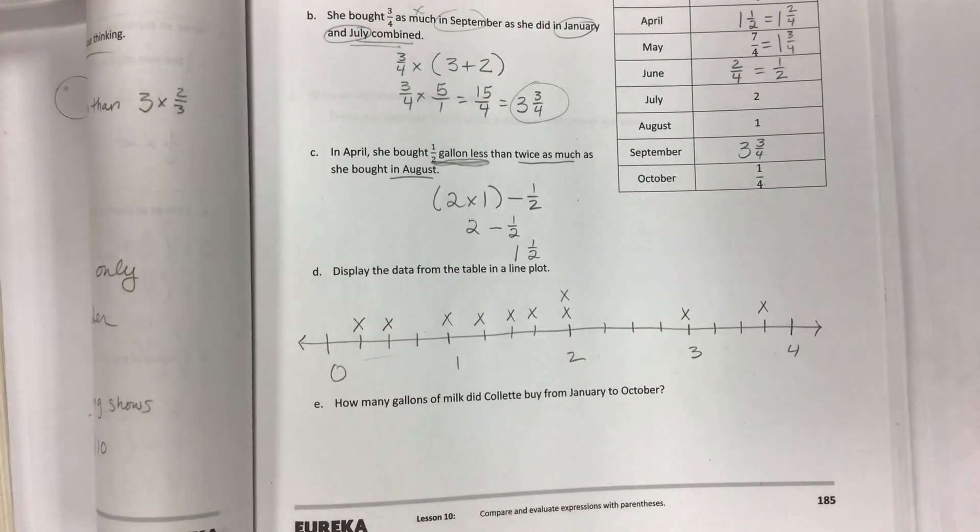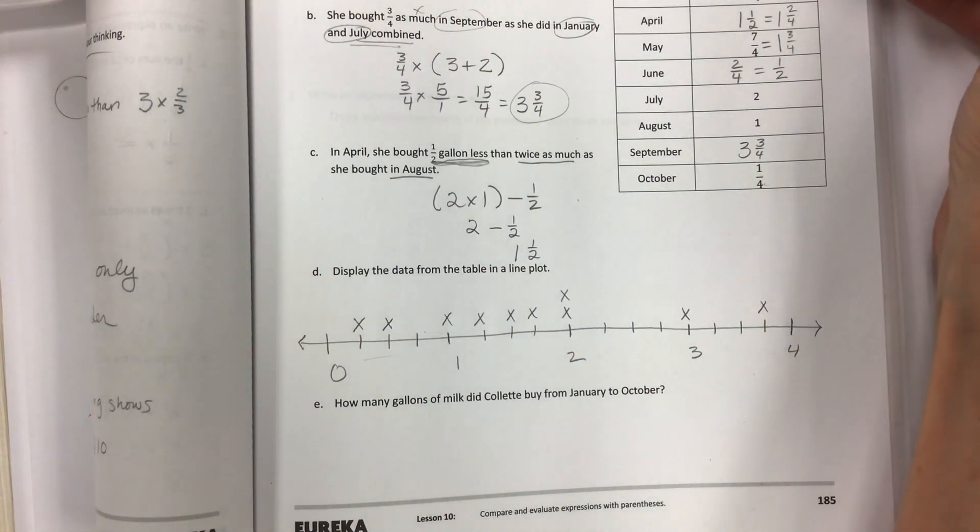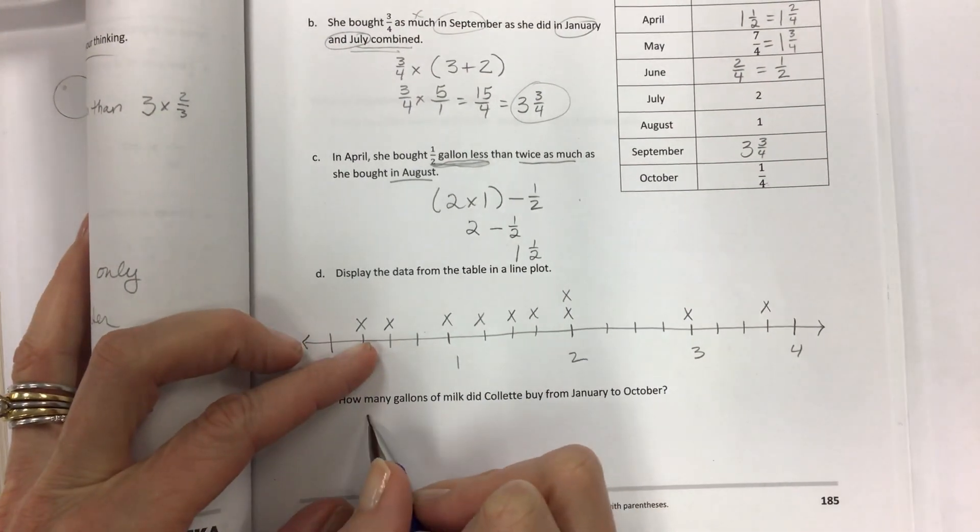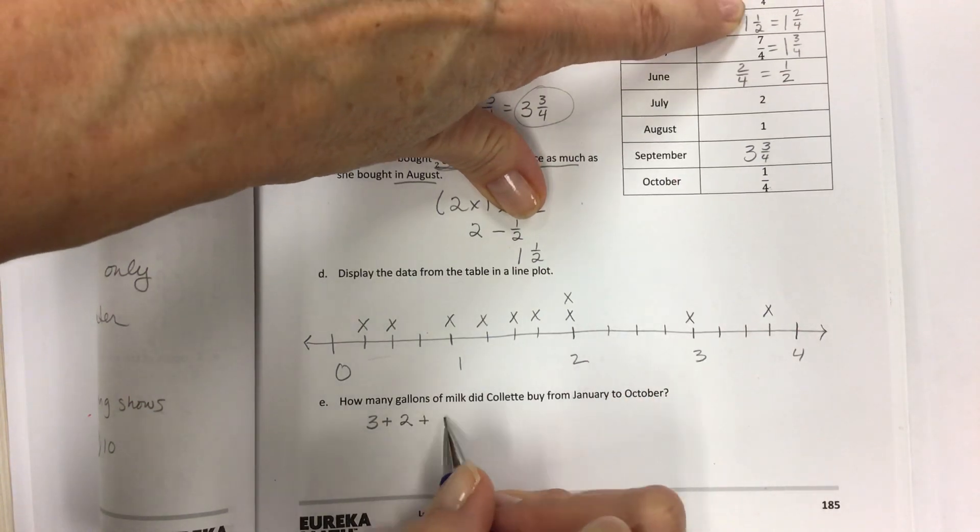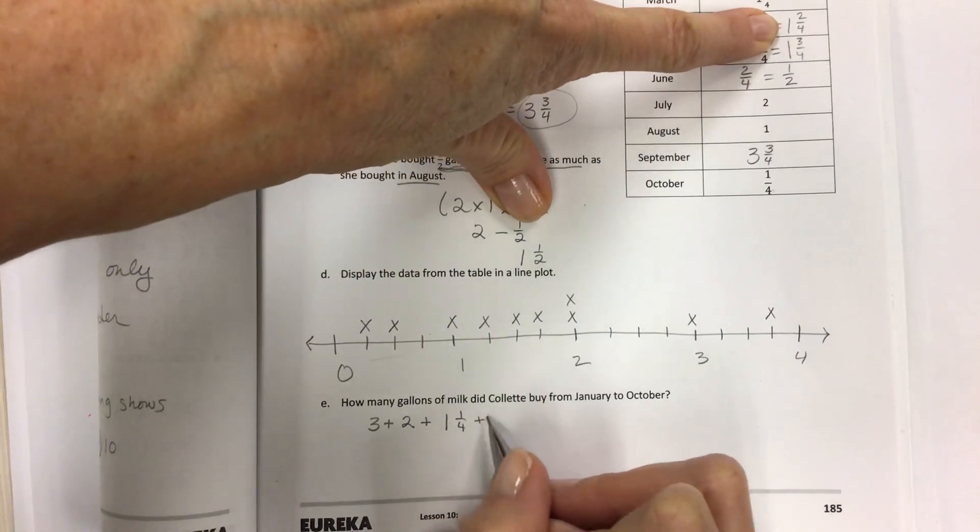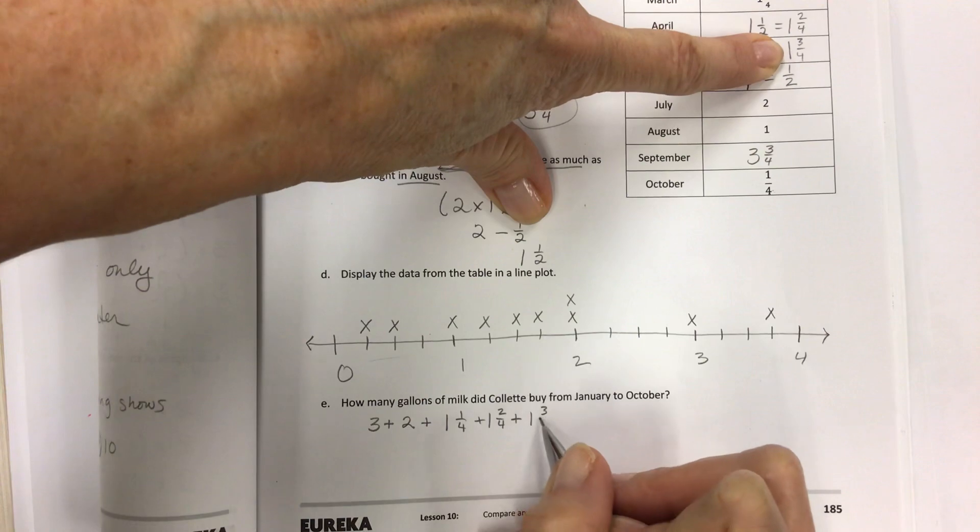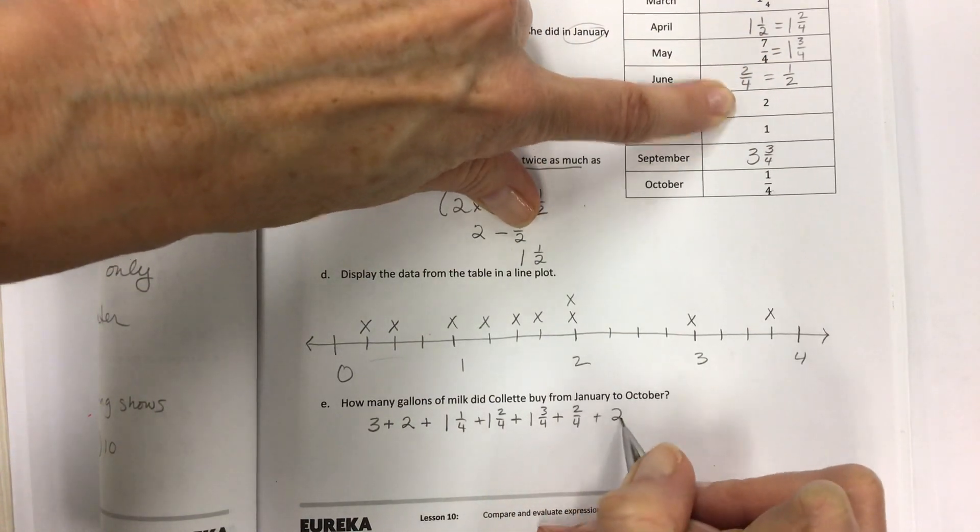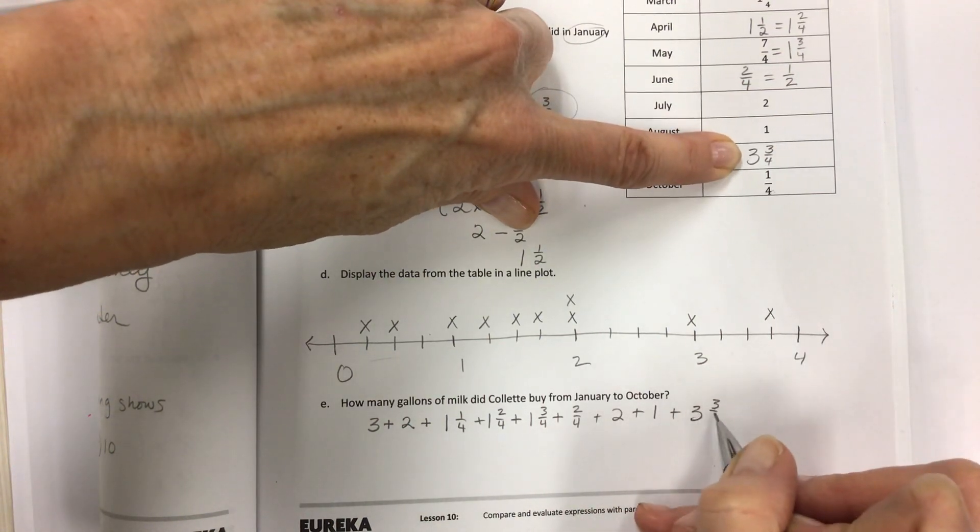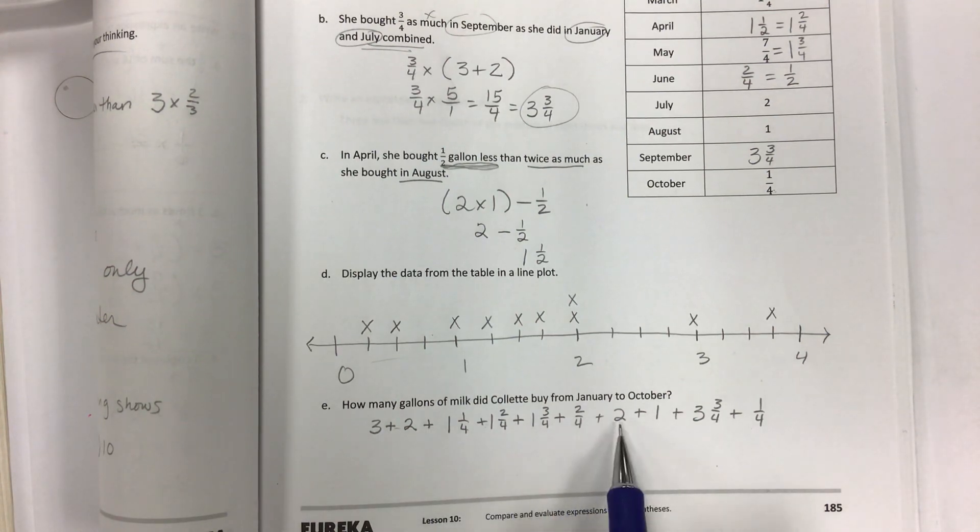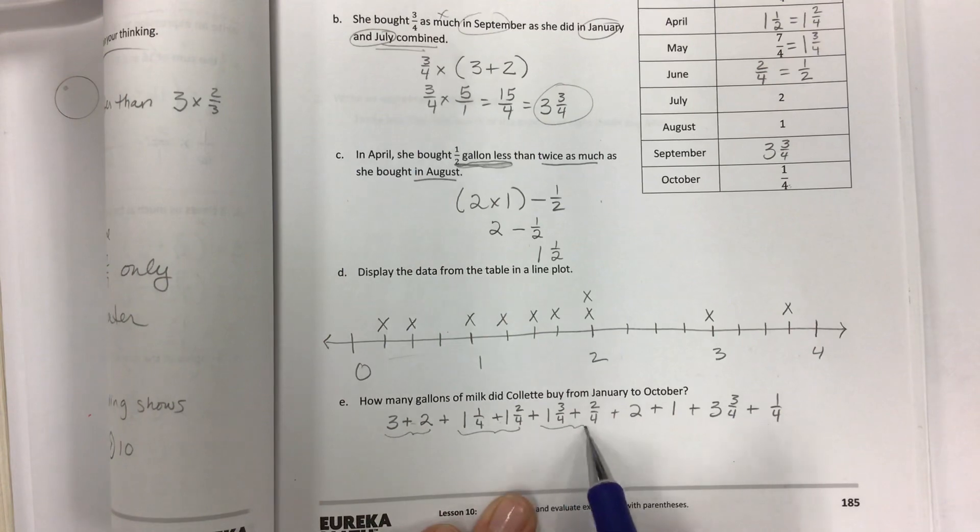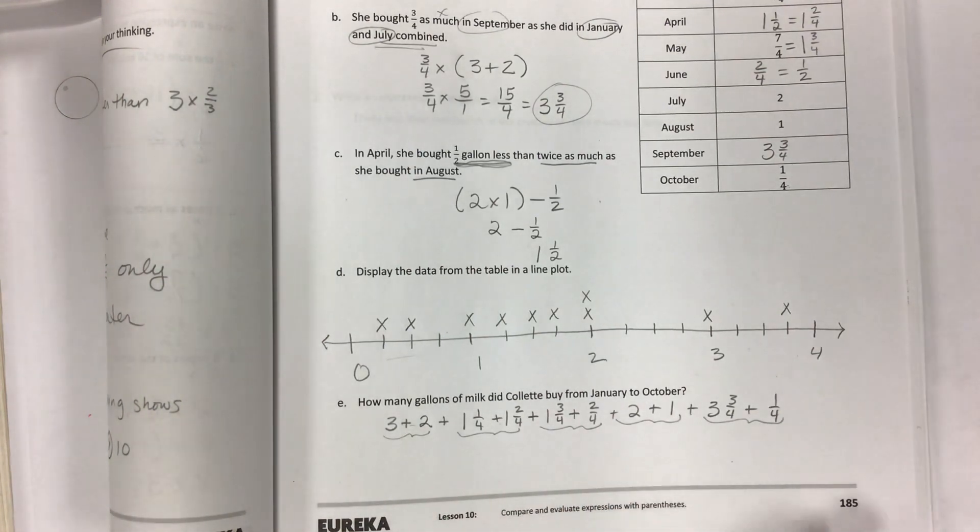The last question says how many gallons of milk did Colette buy from January to October? That means how much is the total of all of these. It's a lengthy expression but you just need to go right down from the top to the bottom like you did with the X's and add everything up. Again use fourths because you want everything to be easy for your adding. When you have this much data and it's all pluses, I like to narrow it down slowly. You can do it your way, but I like to take things in small parts just to try to not make mistakes.